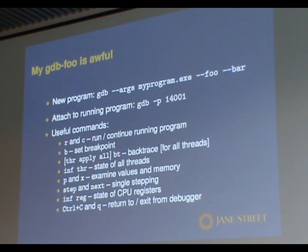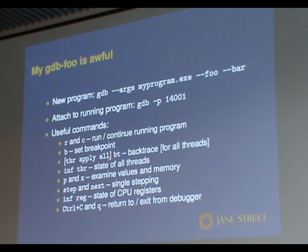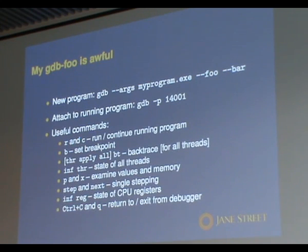GDB is not very complicated to use, and there are just a few commands that can be really useful. You can run GDB with a full command line using minus-args, where everything from that point on is the actual program to run. Or you can attach to a running program, which is also very useful — you can attach, poke around, then detach and it will carry on. There are commands to run and continue after stopping, set a breakpoint at a particular function or line, and BT produces a backtrace of all functions called up to the current point. You can prefix it to do the same across all threads. GDB's help is quite good — if you do apropos followed by a word, it will search the help for that word.